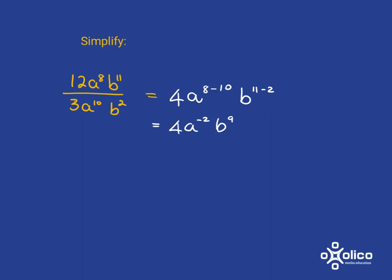Sometimes they like to ask you to write this with positive exponents only. So to give your answer with positive exponents only. In which case, you'll leave the 4 where it is. You'll leave the b to the 9 where it is because those have got positive exponents. But you'll know that a to the minus 2 simply means 1 over a to the 2. So it will go to the bottom.